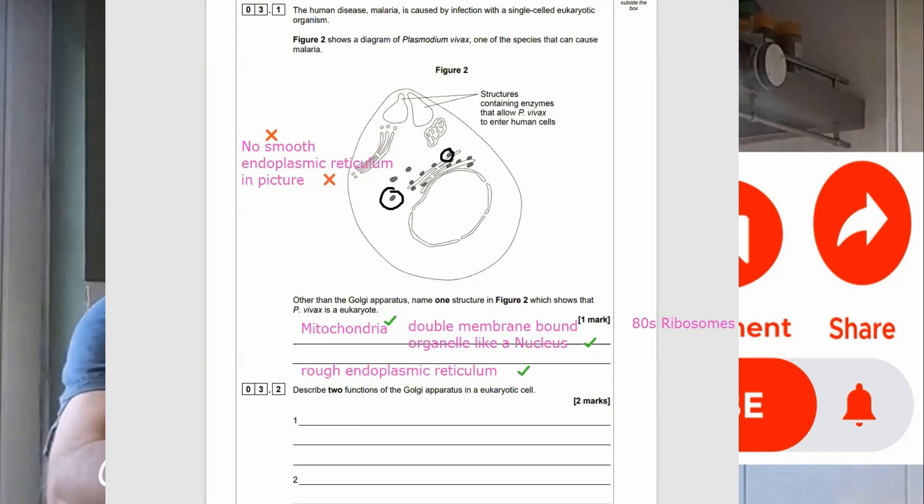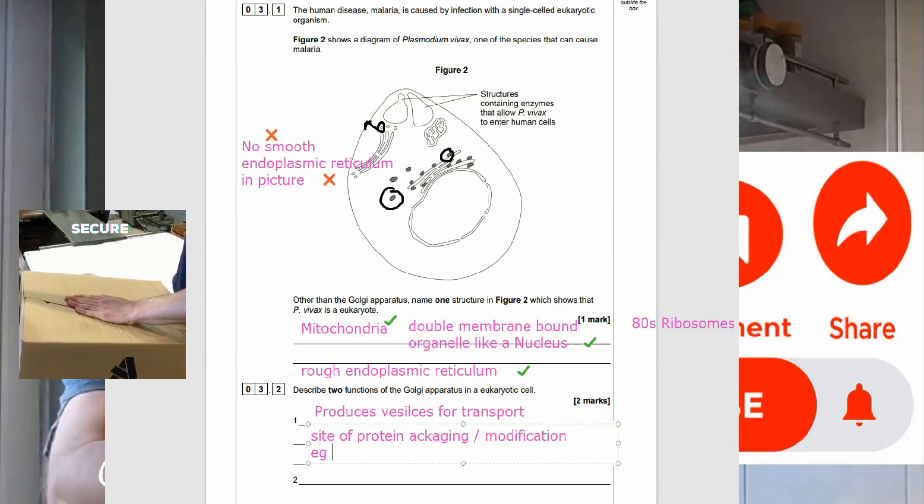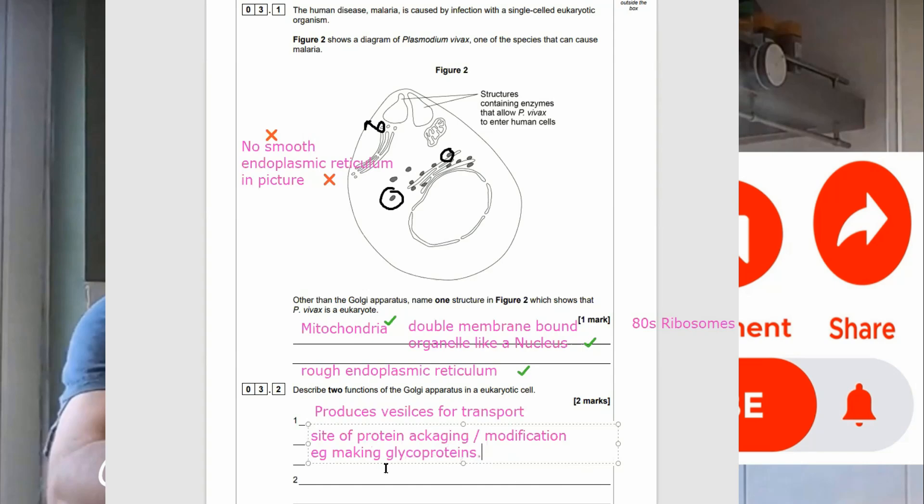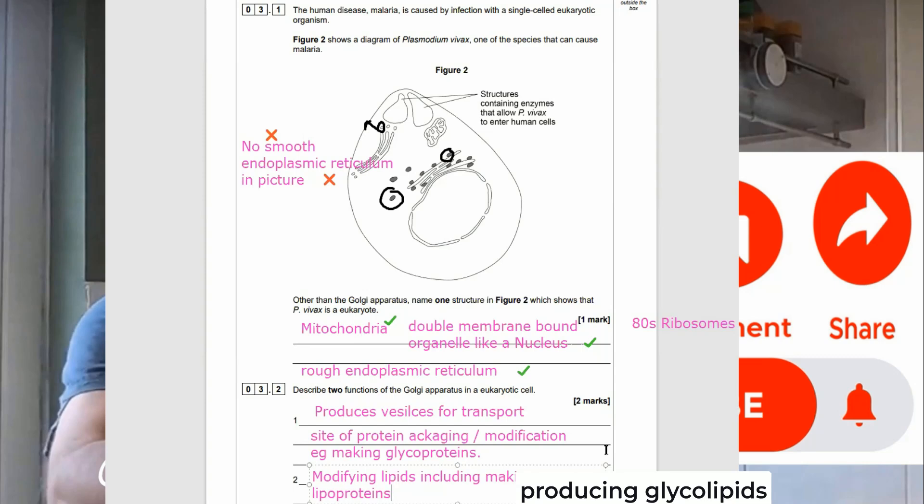So, 3.2 describes two functions of the Golgi apparatus in a eukaryotic cell. So, we can see here they produce vesicles for transport. Of course, things go to and from the Golgi apparatus I'm circling here. They go to the membrane for exocytosis, etc. It's also the site of packaging and modification of proteins. So, packaging or modifying proteins. This can be adding a glucose molecule to make a glycolipid or a lipid to make a lipoprotein. There's all sorts of things we can do, but they're also used for modifying lipids. We could make a glycolipid, so by adding a glucose to a lipid. So we can stick things and modify fats, lipids, or proteins here. It's for packaging and modifying those. Also, for producing vesicles for transport.